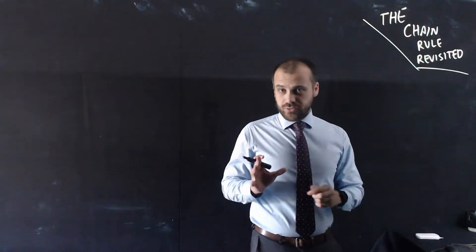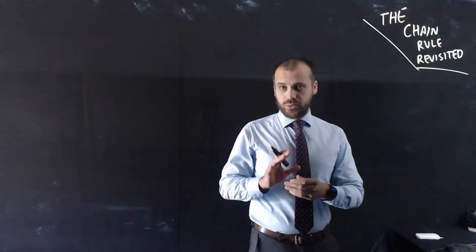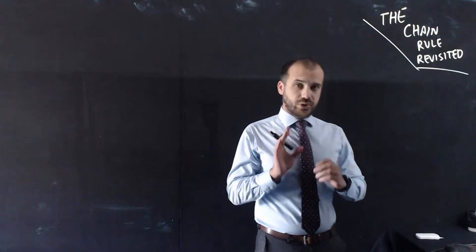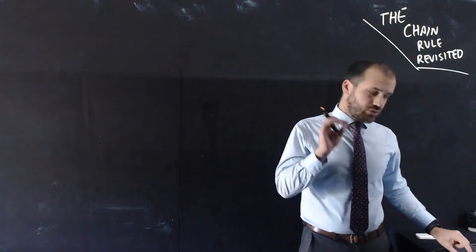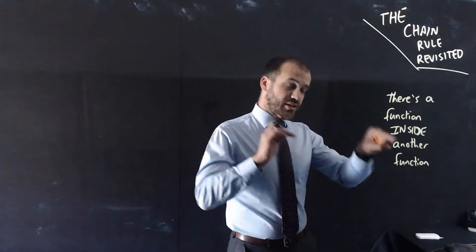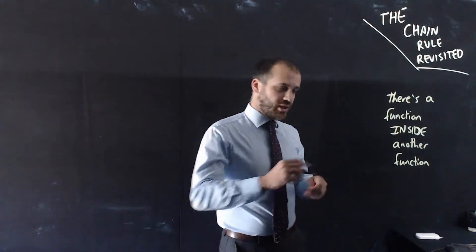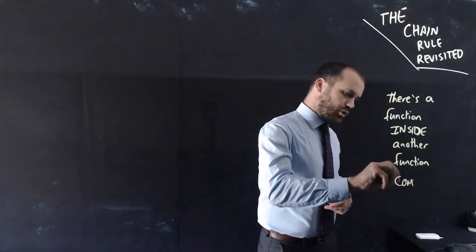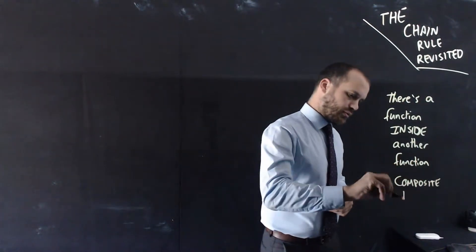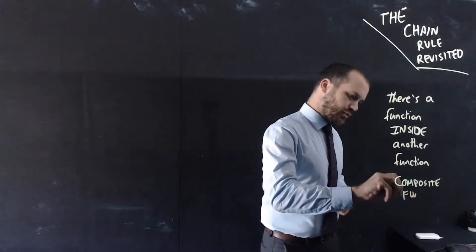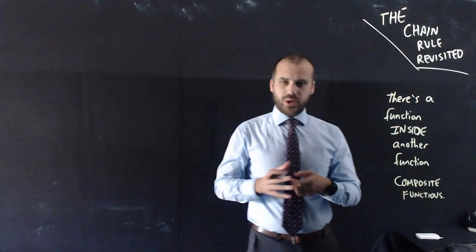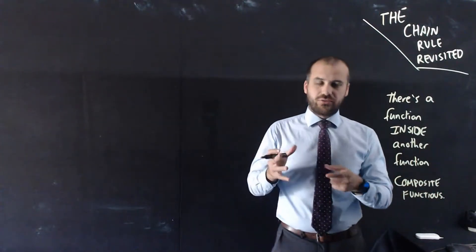We're looking at the chain rule here. We've seen it before, but we're going to do it with a whole bunch of different functions. The idea with the chain rule is very simple: you use the chain rule when there's a function inside another function. Now, we call this a composite function. I'll show you a bunch of examples — that's going to be the easiest way to see a chain rule question.